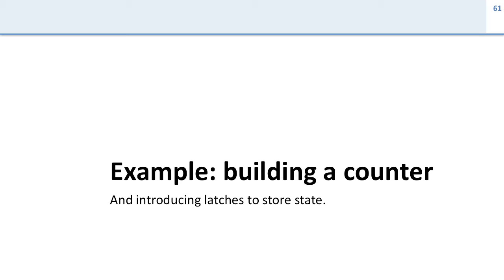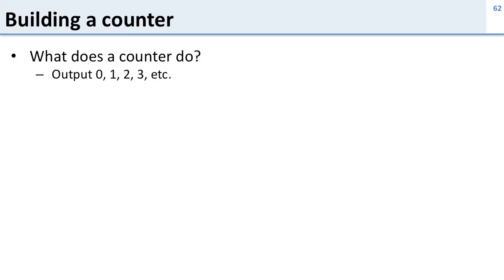We're going to go through another example where we build a counter — a circuit that counts 0, 1, 2, 3. This is important because we're going to introduce something called state, where we store a value in a circuit rather than just calculating a value based on inputs. So what does a counter do? It counts up 0, 1, 2, 3. In logic, we write: next value equals current value plus 1.